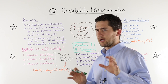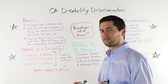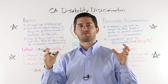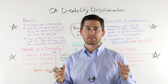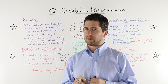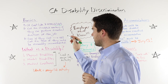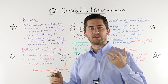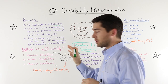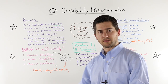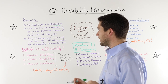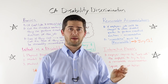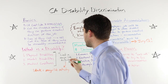First, some basics. California Government Code section 12940, subsection A and subsection M, describe California's disability discrimination law as we know it today. At its very basic level, it says two big things. First, you can't fire or discriminate in any way against a disabled worker if that person can perform the essential functions of the job — as long as they can do the job, you cannot discriminate against them because of their disability. Second, even if that disabled worker can't do the essential functions of the job, you still can't terminate them if they could have performed them with a reasonable accommodation.